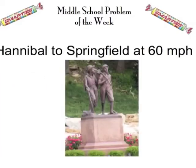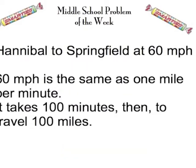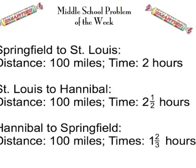Our final leg is from Hannibal to Springfield at 60 miles per hour. Well, of course, 60 miles per hour is the same as a mile per minute. So if you go 100 miles, you need 100 minutes. And 100 minutes equals one hour and 40 minutes, or one and two-thirds hours.